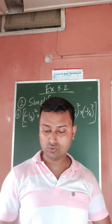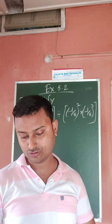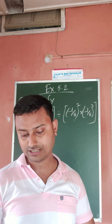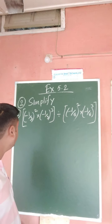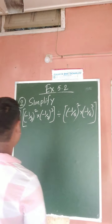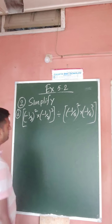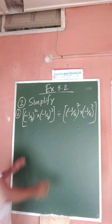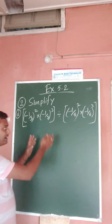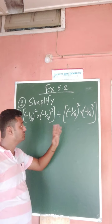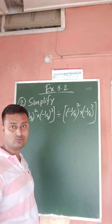Question number 2 up to C is already finished. So today I will start from question number 2D. To simplify: minus 1 by 3 whole square into minus 1 by 3 whole cube, that part divided by minus 1 by 6 whole square into minus 1 by 6 whole cube.